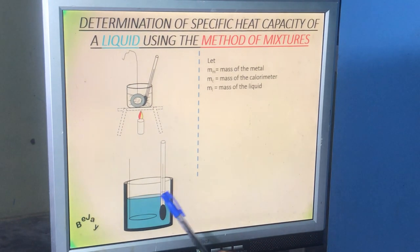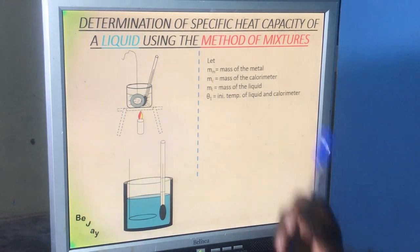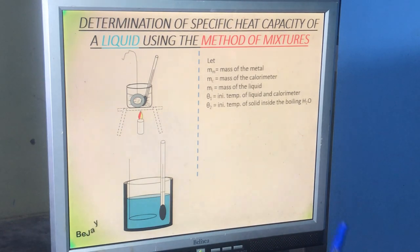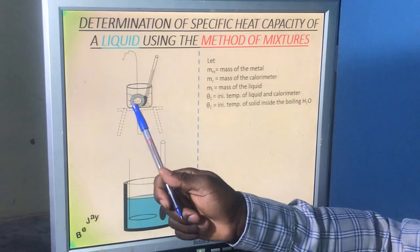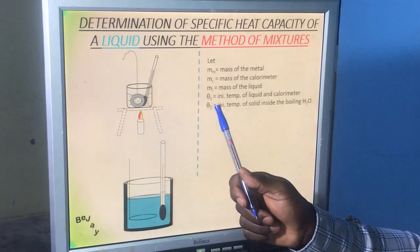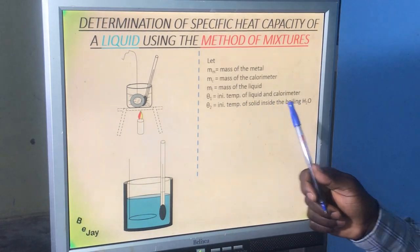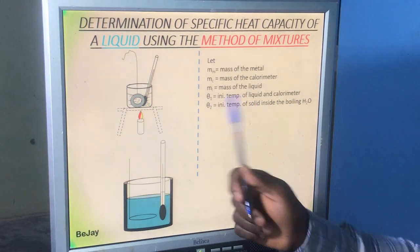We put a thermometer inside to determine the initial temperature of the water and the calorimeter. We call that initial temperature theta 1. Then we determine the temperature of the metal, which is inside the water being heated. We call the initial temperature of the metal theta 2.